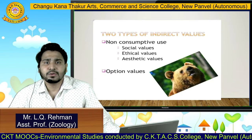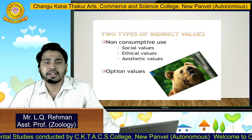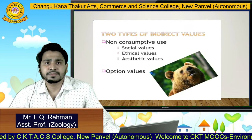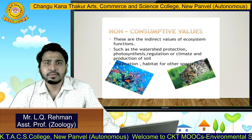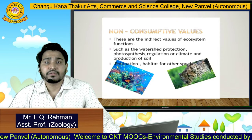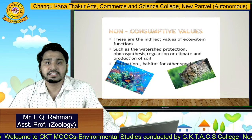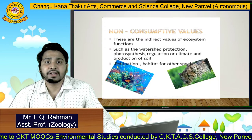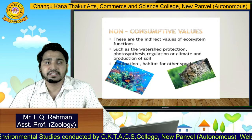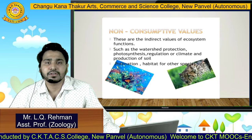There are two types of indirect values: non-consumptive use, and social, ethical, aesthetic, and optional values. Non-consumptive values are indirect values of ecosystem functions such as watershed protection, photosynthesis, regulation of climate, production of soil, pollination, or habitat for other species. These are all non-consumptive use values or indirect values of the ecosystem.